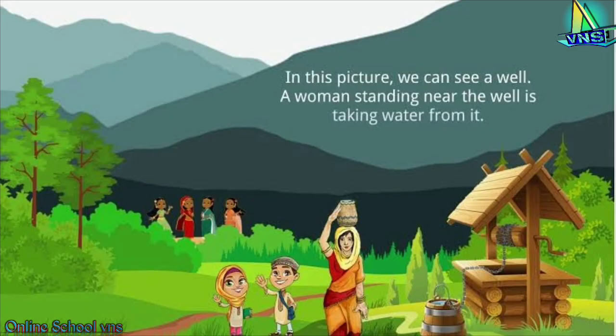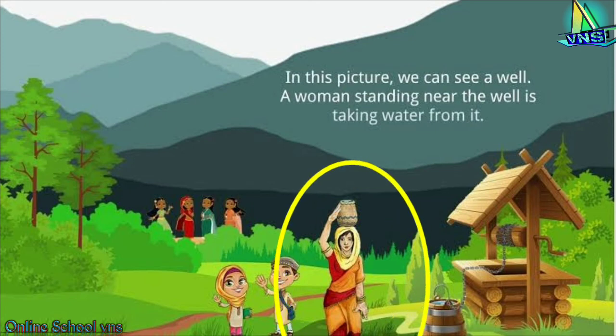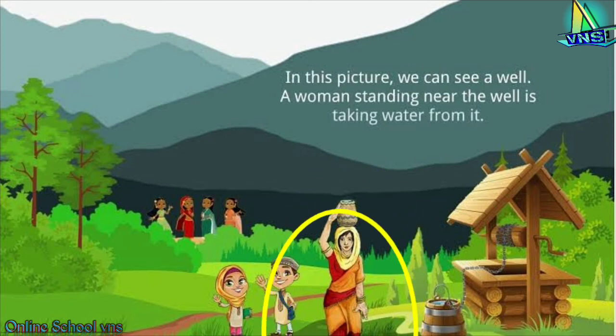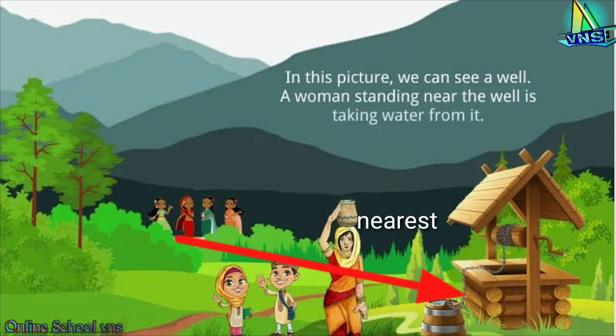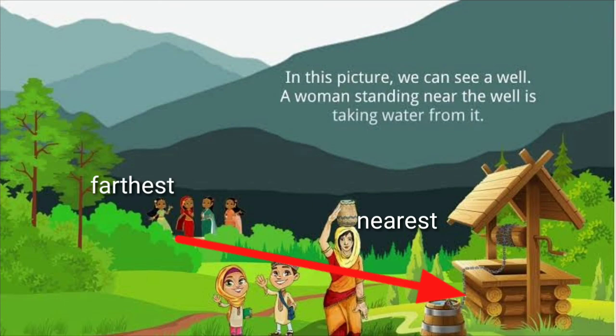In this diagram we can see that women are coming to take water from the well. This woman is having very less distance from the well and that woman is having the most distance from the well, so we can say that this woman is nearest to the well and that woman is farthest from the well.